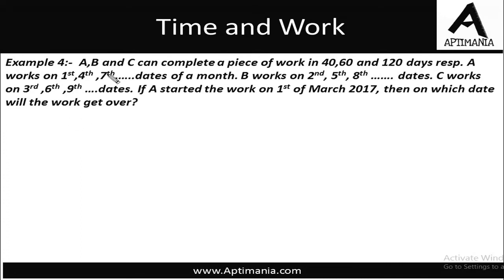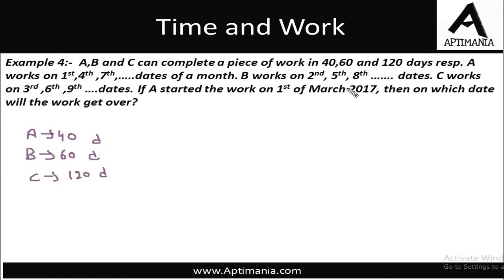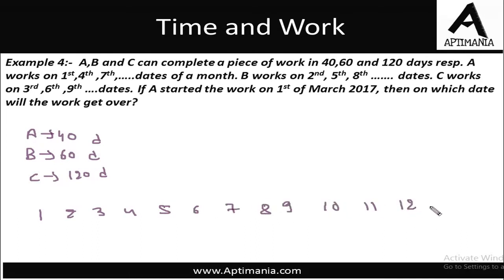Next example: A, B and C can complete a piece of work in 40, 60 and 120 days respectively. They work like this: A works on the 1st, 4th and 7th dates of a particular month; B on the 2nd, 5th and 8th; and C on the 3rd, 6th and 9th. So A will work on day 1, then day 4, then day 7, then day 10, and so on — basically A works for 1 day, then takes a leave of 2 days, then returns to work, then takes a leave of 2 days, and so on.